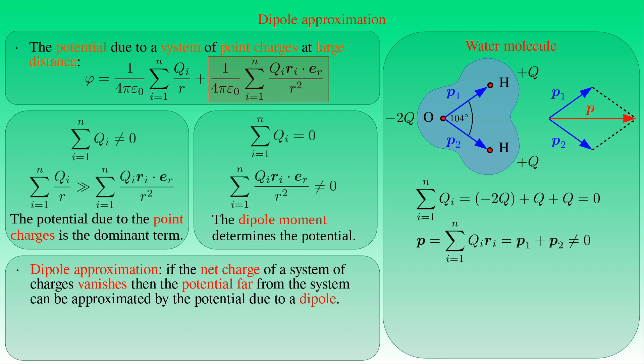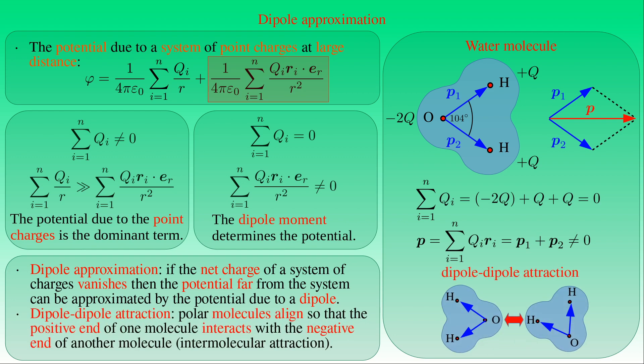As a result, dipole-dipole interactions can be observed between polar molecules, which align so that the positive end of one molecule interacts with the negative end of the other. Since this involves an interaction between molecules, it is also called intermolecular attraction, and can be described by the dipole approximation of the potentials of the individual attracting molecules.